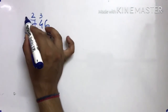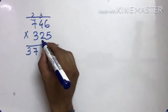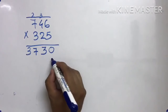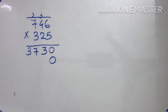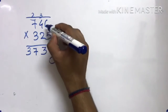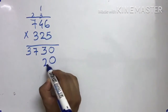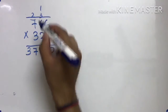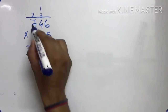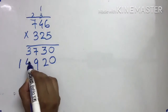Abhi carry ko hum cut kar denge. Aur second number multiply karne se pehle last number ke neeche humein 0 daalna hai. Ye last lecture mein humne padha tha. Abhi 2 × 6 = 12. 2 × 4 = 8, 8 plus 1 = 9. 2 × 7 = 14.